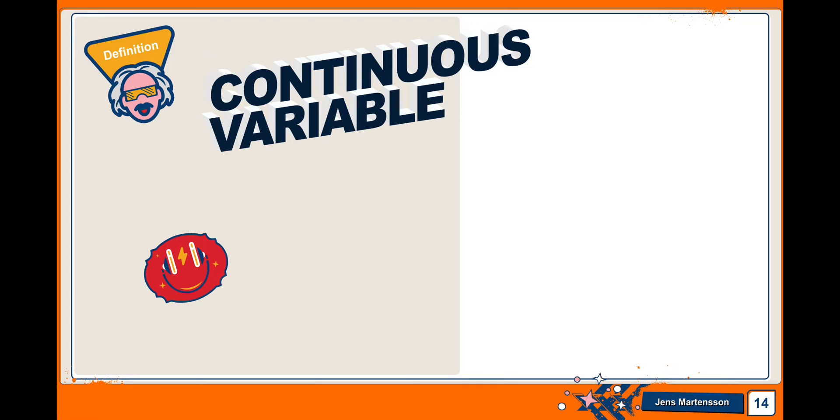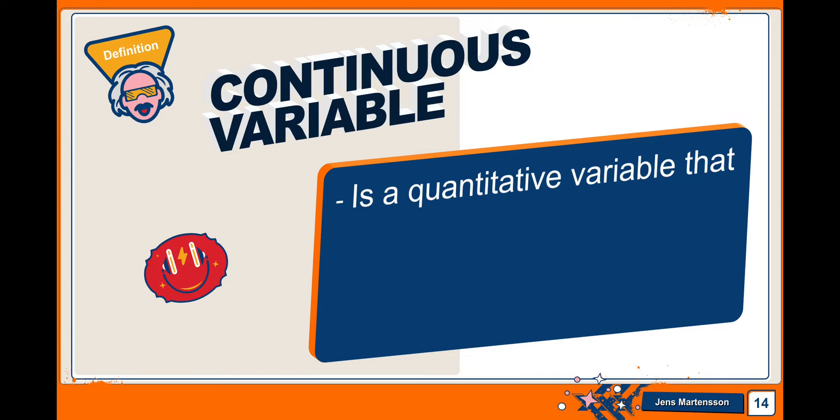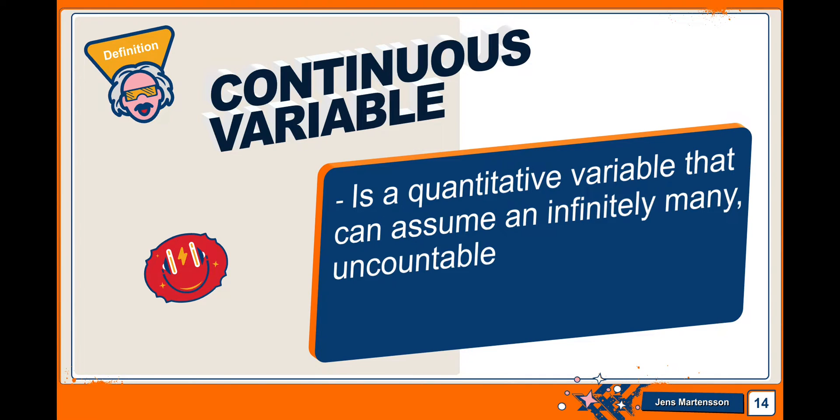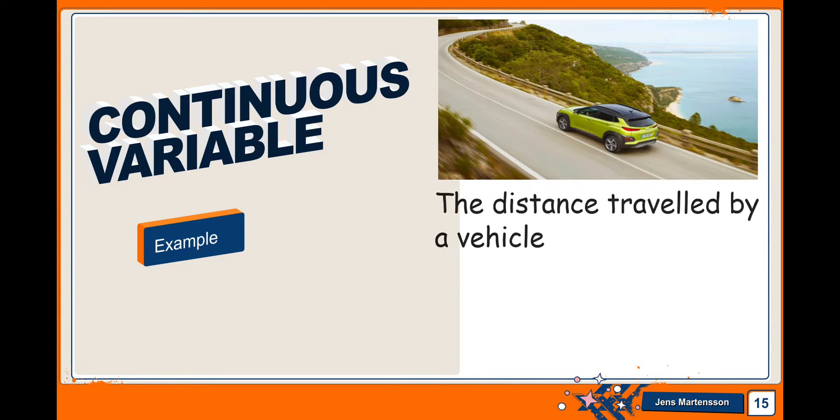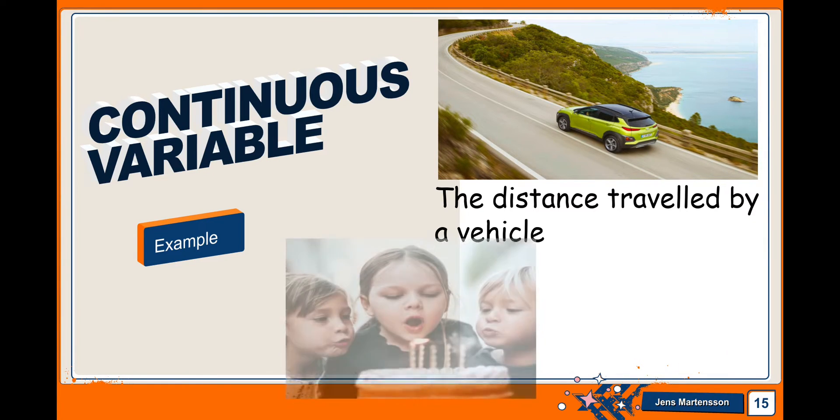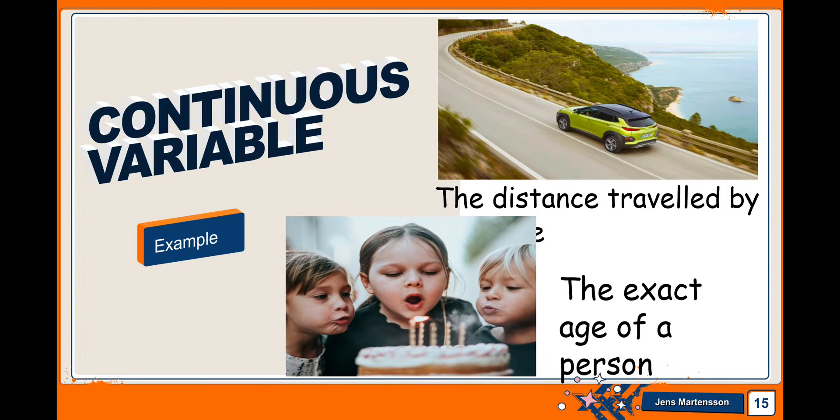The second variety of random variable is continuous variable. It is a quantitative variable that can assume an infinitely many unaccountable number of real number of values. Example of continuous variable is the distance traveled by a vehicle, the exact age of a person, because you can give the exact age. Maybe you are 16 years old in 3 days, and so on.